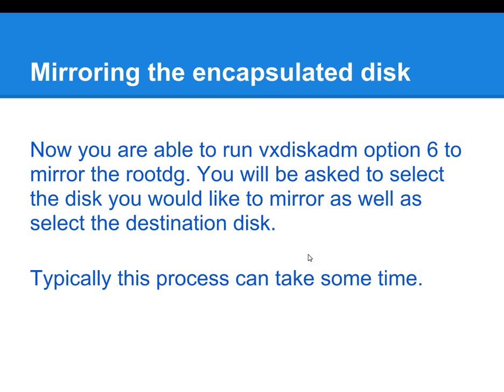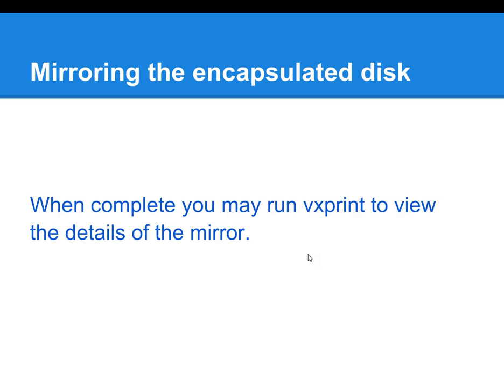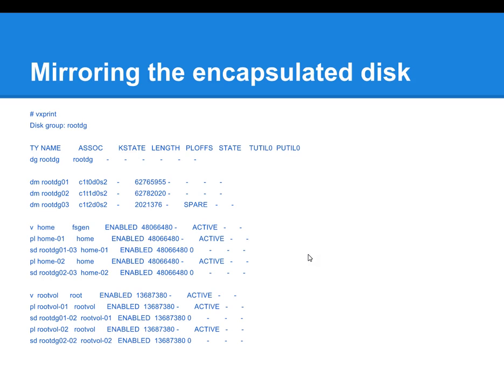Now that all disks are in the system — the root disk has been encapsulated, one disk added to mirror the root disk, and an additional disk added to mark as a spare — run VxDiskADM and select option six to mirror the root disk on the rootDG group. You'll be asked to select the source and destination. Follow the prompts; this can take a bit of time. Once completed, you can run VxPrint to view the details of the mirror.